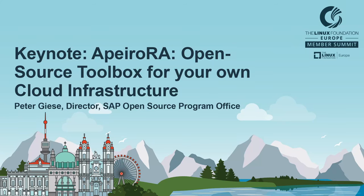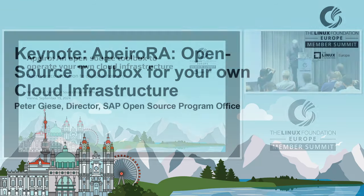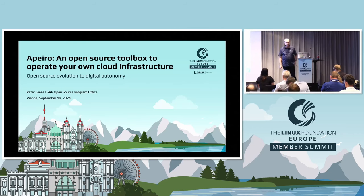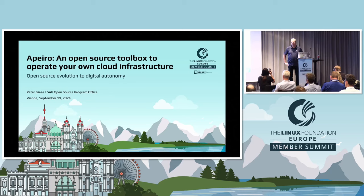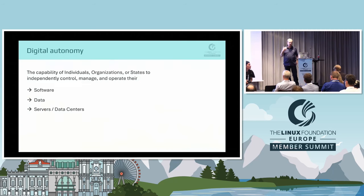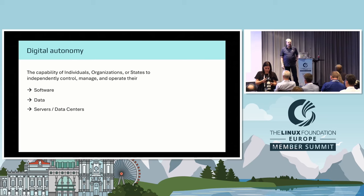Good morning. How is the energy in the room? It seems the coffee has done its job by now. My name is Peter Giese. I'm head of the SAP Open Source Program Office, and in the next 20 minutes I want to have a closer look together with you on the role of open source for improving digital autonomy, and also on the Appairo project, which helps your companies or organizations in raising the level of digital autonomy by providing an open source toolbox for managing your own cloud infrastructure.